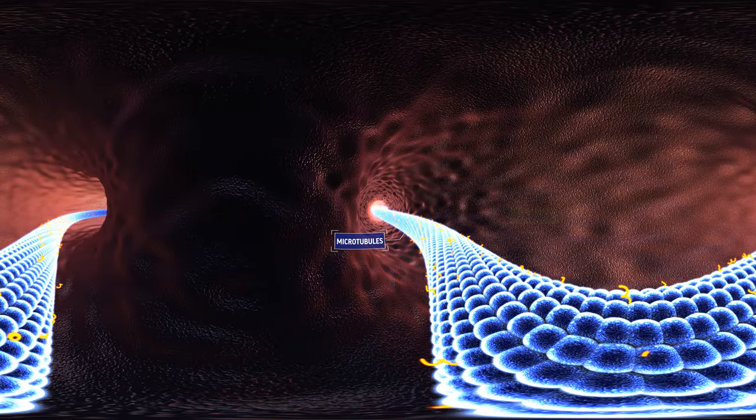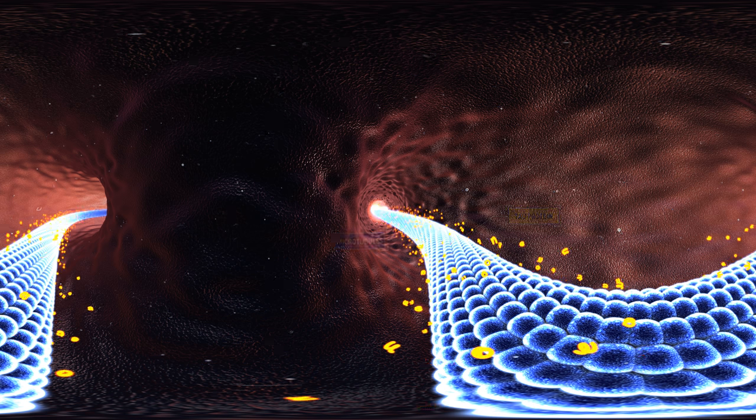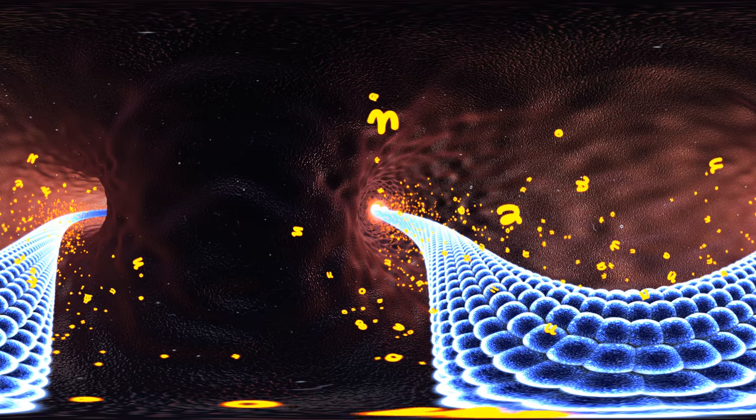In Alzheimer's disease, tau becomes abnormal. The strands, shown in yellow, twist into tangles that can't support those microtubules. The transport system collapses, and as a result, the cell eventually dies.